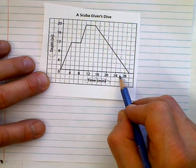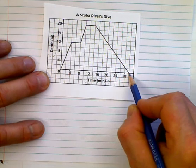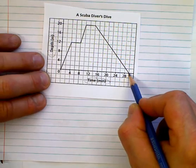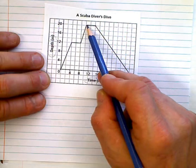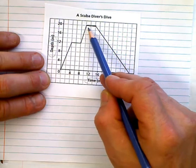24, 26, 28, 30. So, it was a 30-minute dive. Maximum depth, we said, was 20 meters. How long did he stay at 20 meters? Well, two ticks. They're each two. So, that's four.